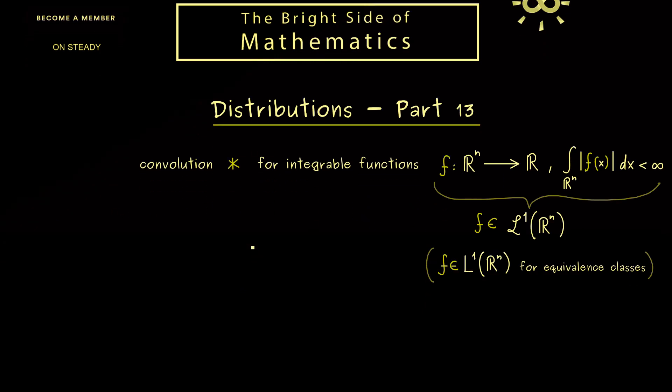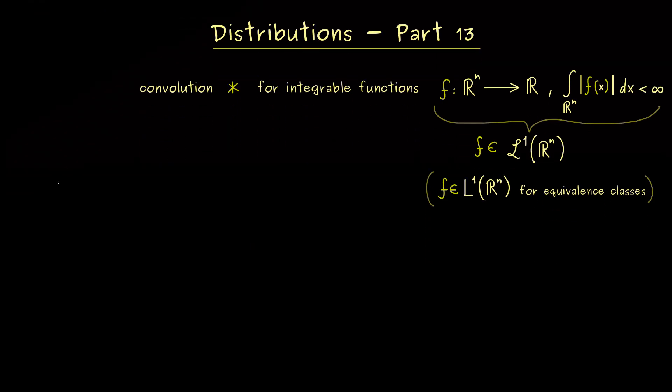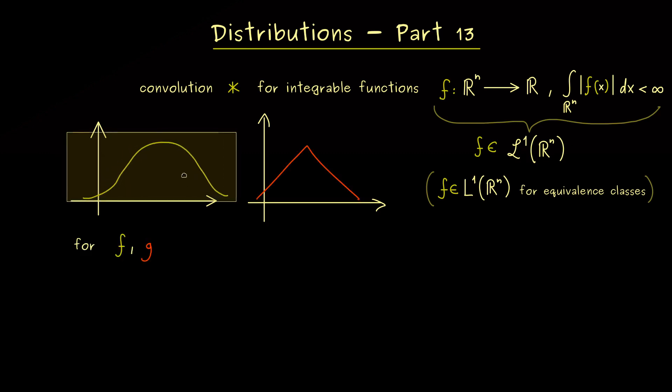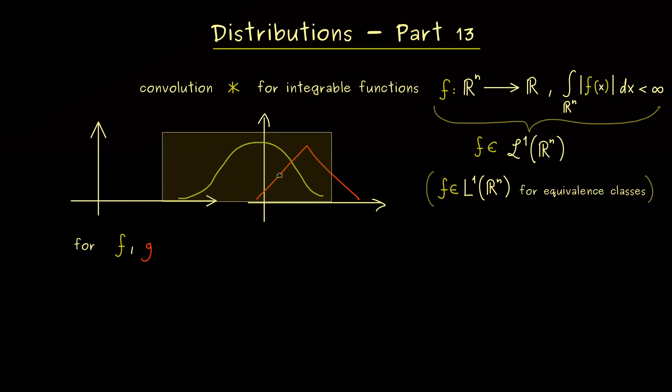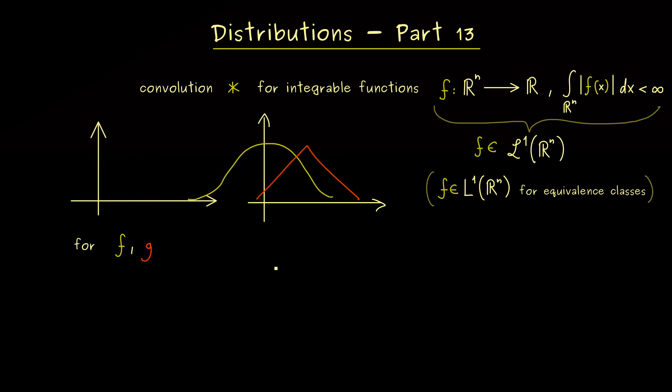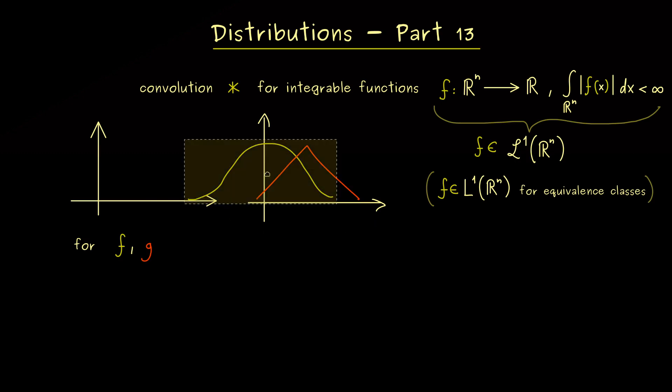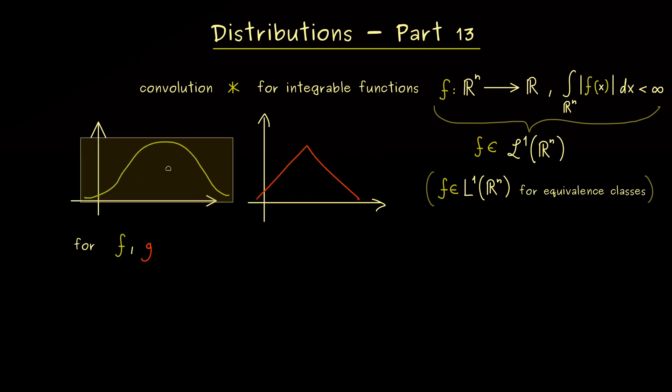And now the point is that for such integrable functions we can define the convolution. This is like a multiplication for two functions. The rough idea for this you get when you look at the graphs of the functions. Let's say we have a function f here and another function g there.